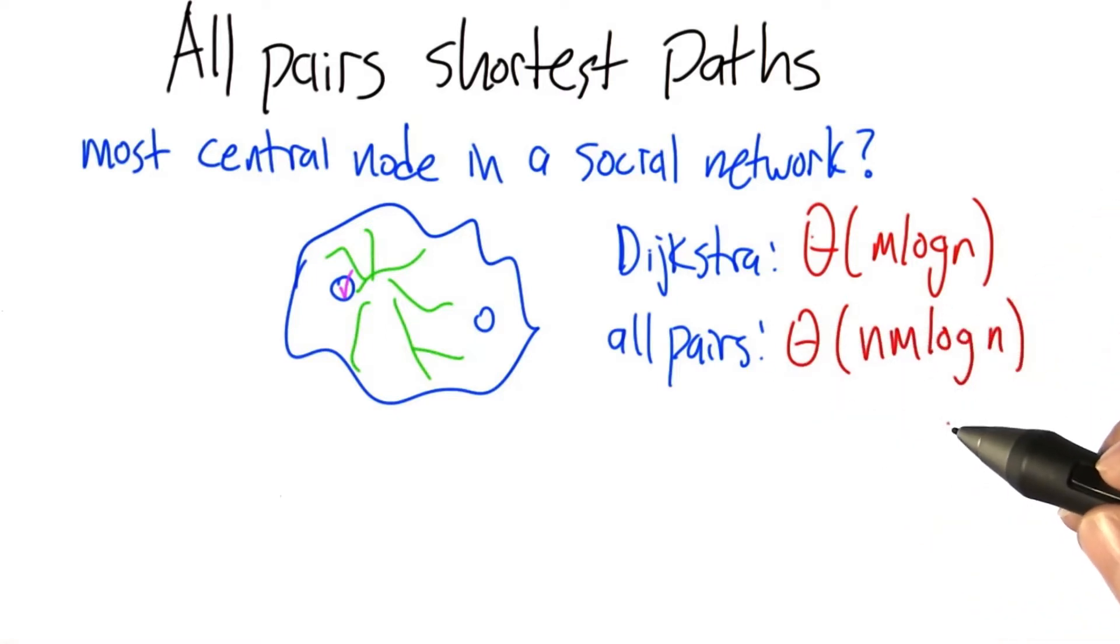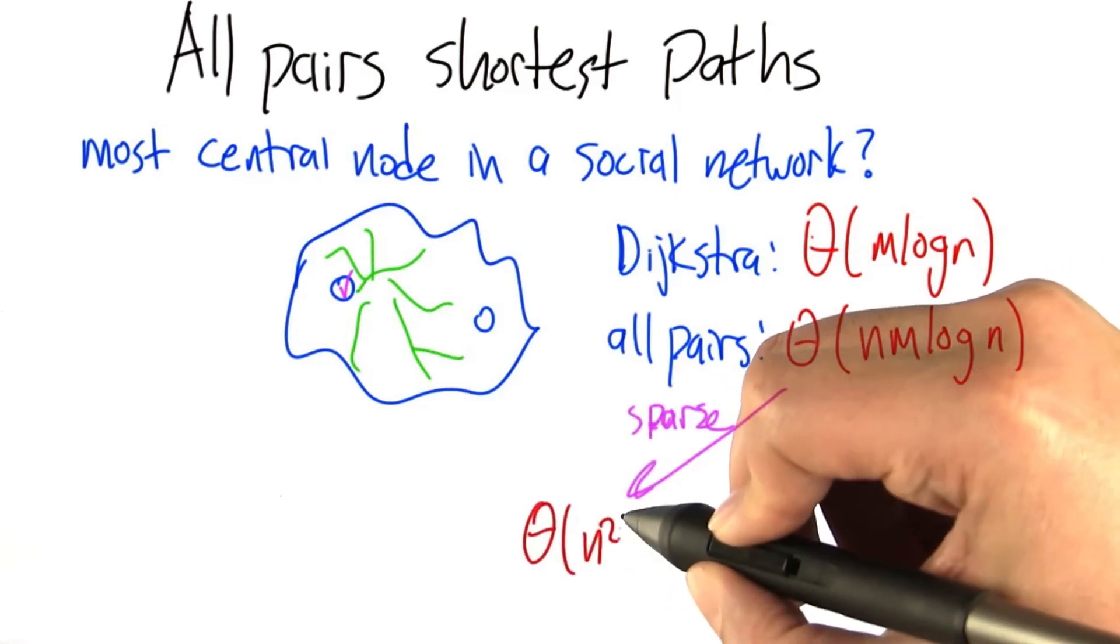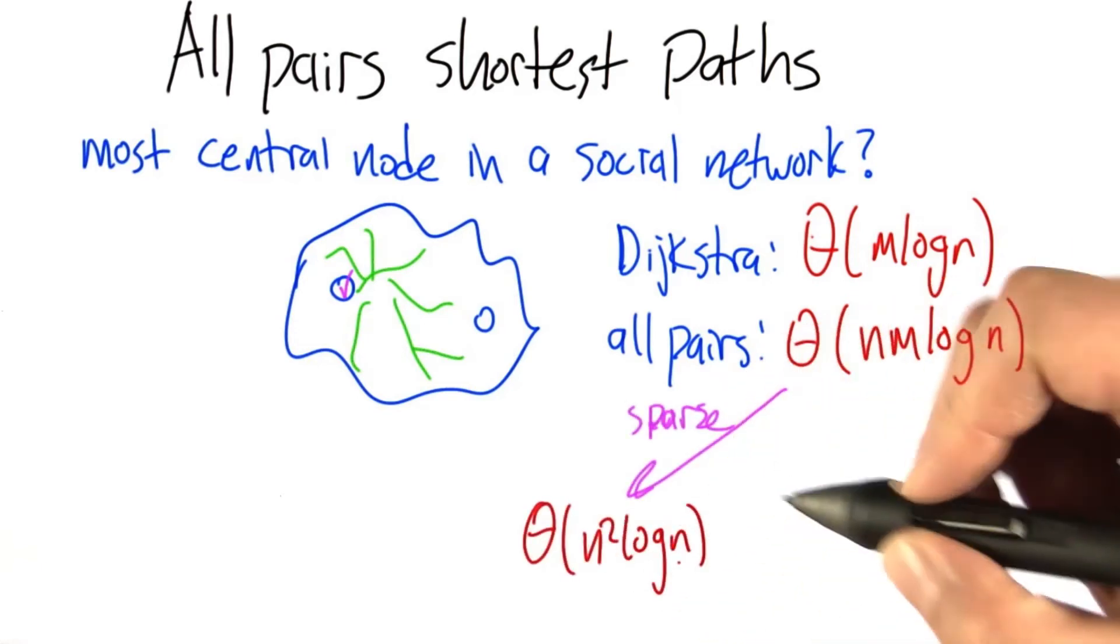This quantity can have a range of values depending on how densely connected the graph is. If the graph is connected but very sparse, m is the same as n, so we get n squared log n.